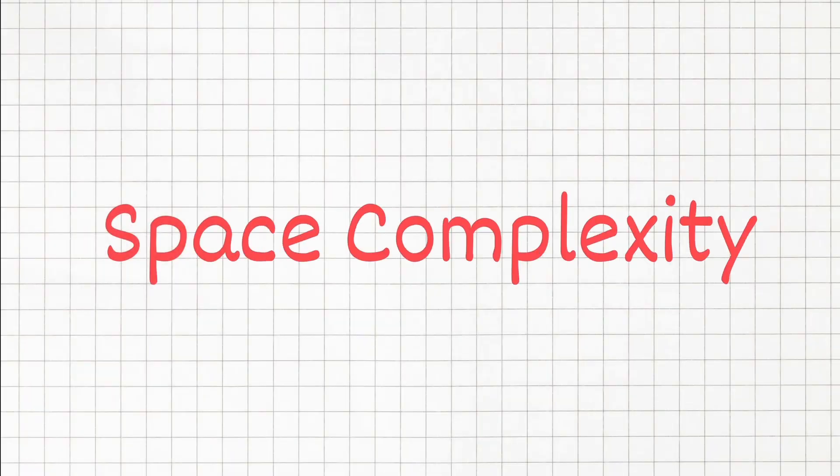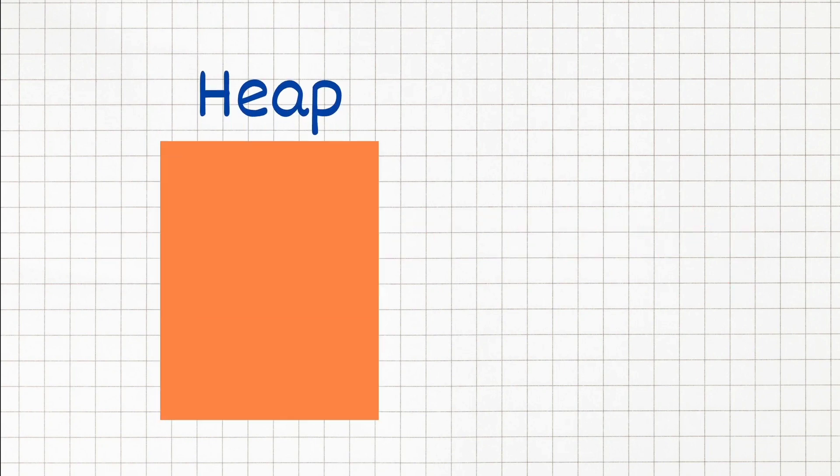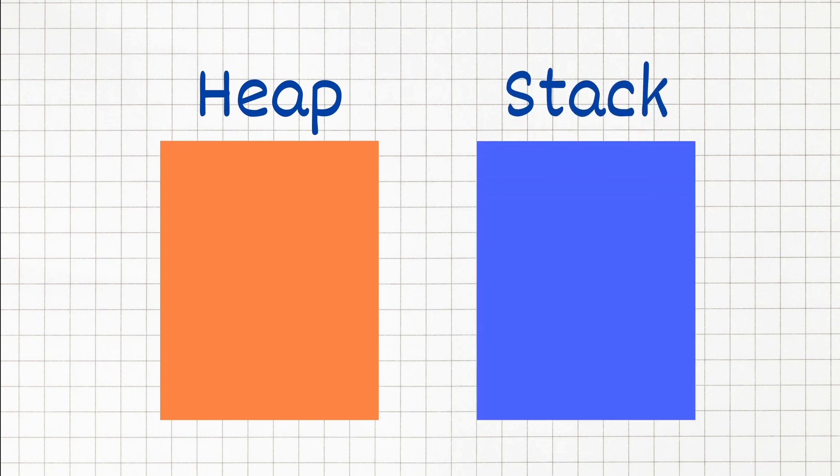Now let's talk about the space complexity. When a program executes, it has two ways to remember things. The heap and the stack. The heap is usually where we store variables that we assign values for, and the stack is where we keep track of our function calls.